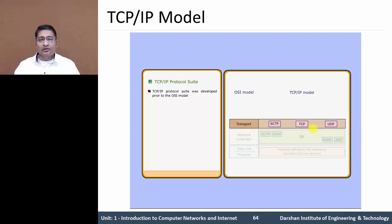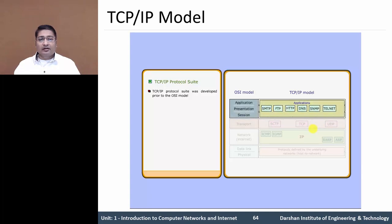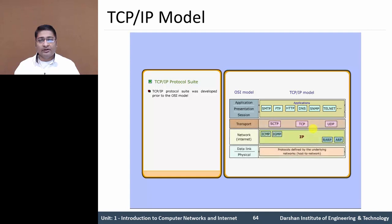The second one is the Network or Internet Layer, which in OSI is equivalent to the Internet Layer. The Transport Layer provides reliable delivery using TCP and UDP. The Application Layer is equivalent to the combined 3 layers: Application Layer, Presentation Layer, and Session Layer of the OSI model.